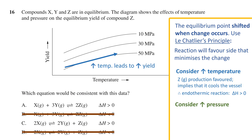If we now consider an increase in pressure, say from 10 to 15 MPa, keeping all else constant, that would be represented on the plot as a vertical movement from the topmost curve to the bottommost curve, representing constant temperature. Moving down along the plot means the yield is going down. Therefore, an increase in pressure leads to a decrease in yield.